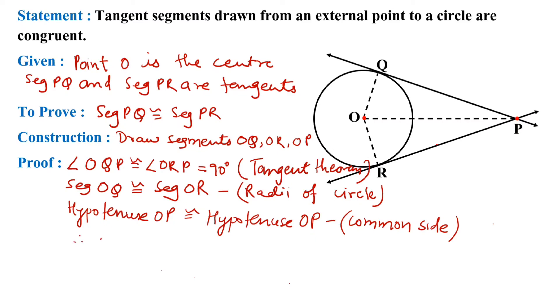So these two triangles are congruent. That is, triangle OQP is congruent to triangle ORP by the hypotenuse-side test.